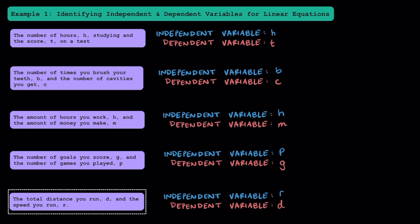When you're trying to decide which piece of information is the independent and dependent variable, ask yourself which scenario makes more sense. Your test score typically depends on how much studying you put in. The amount of cavities you get depends on how much you brush your teeth. The amount of money you make depends on how many hours you work. The amount of goals you score depends on how much playing time you get. And the distance you run depends on the rate or speed.